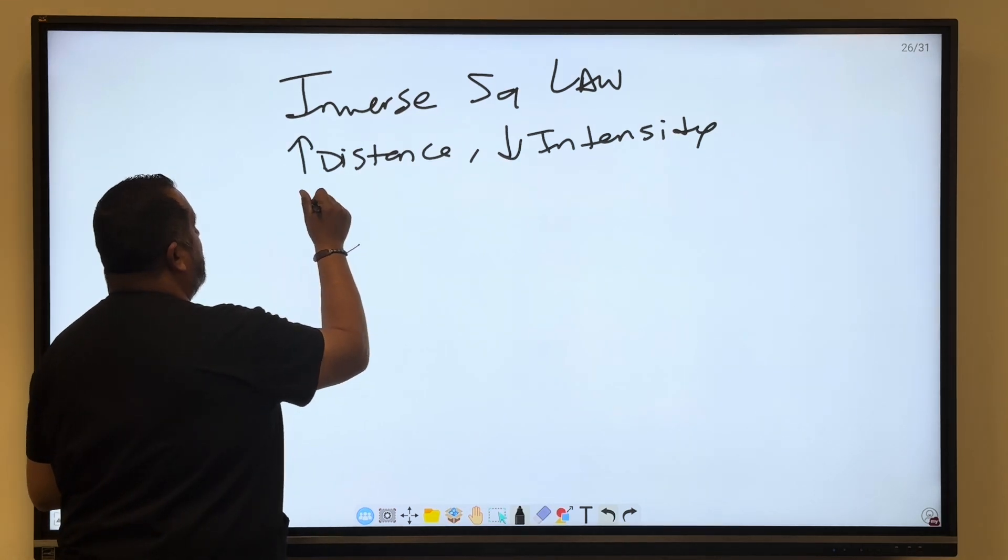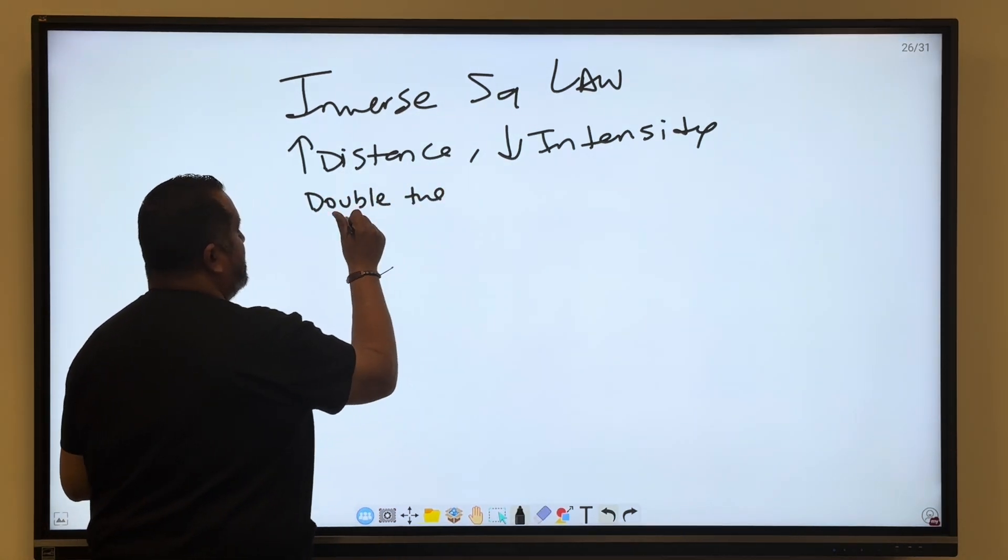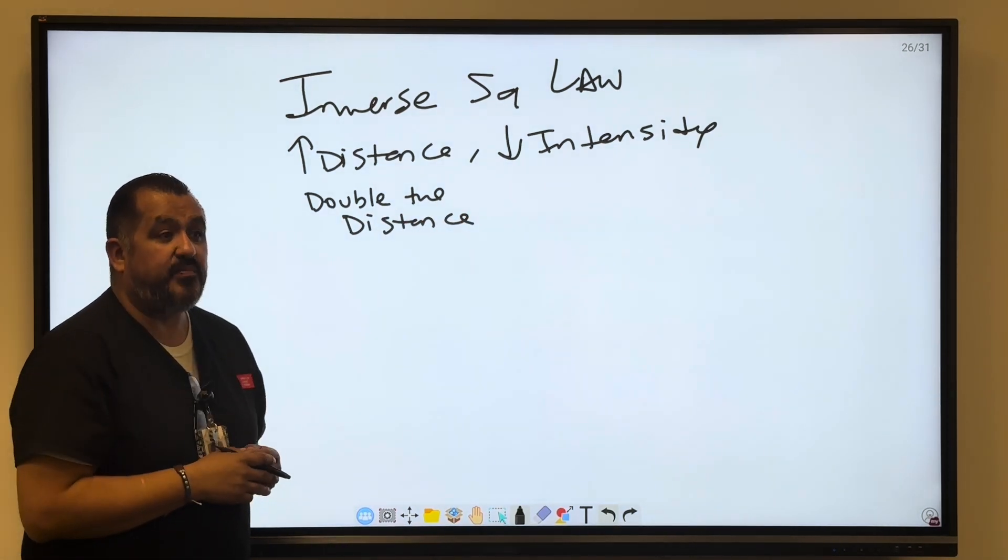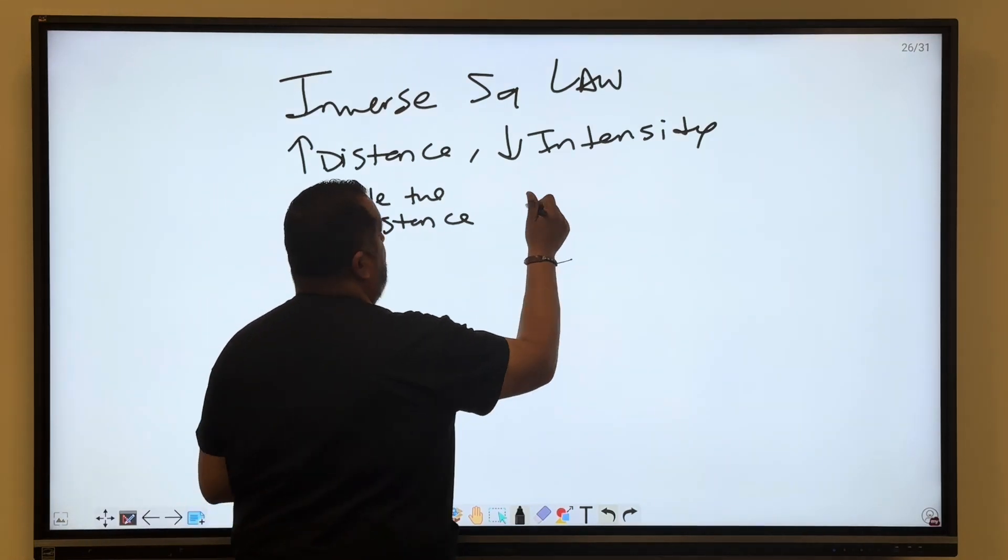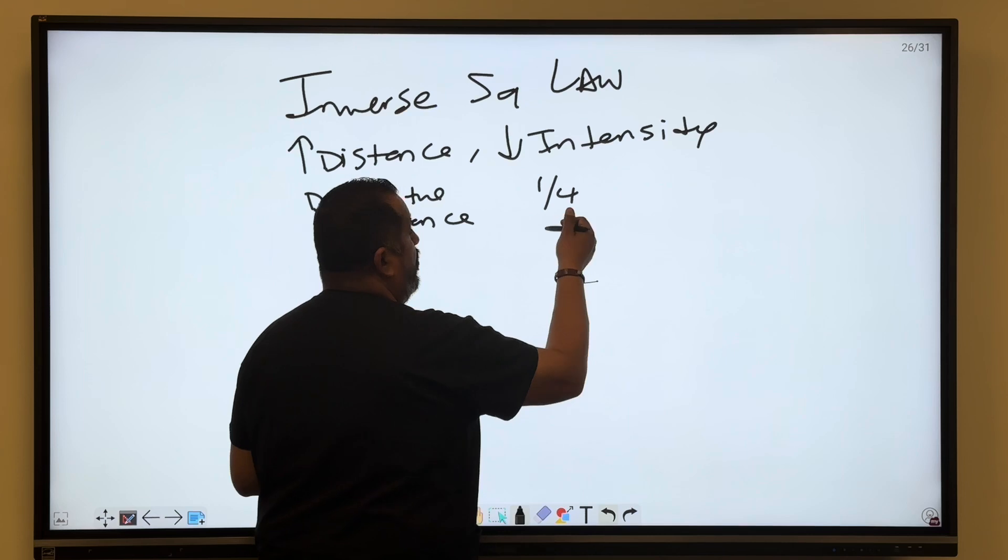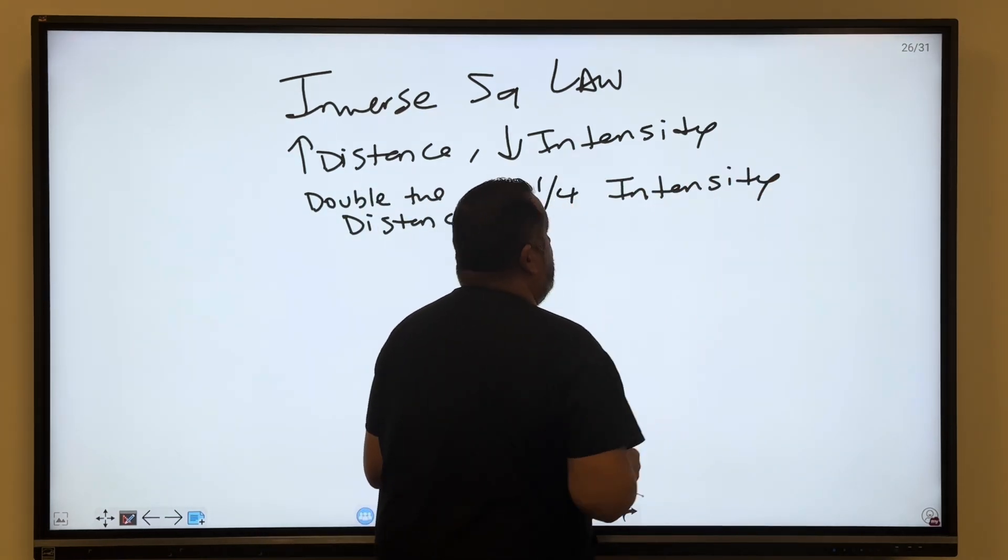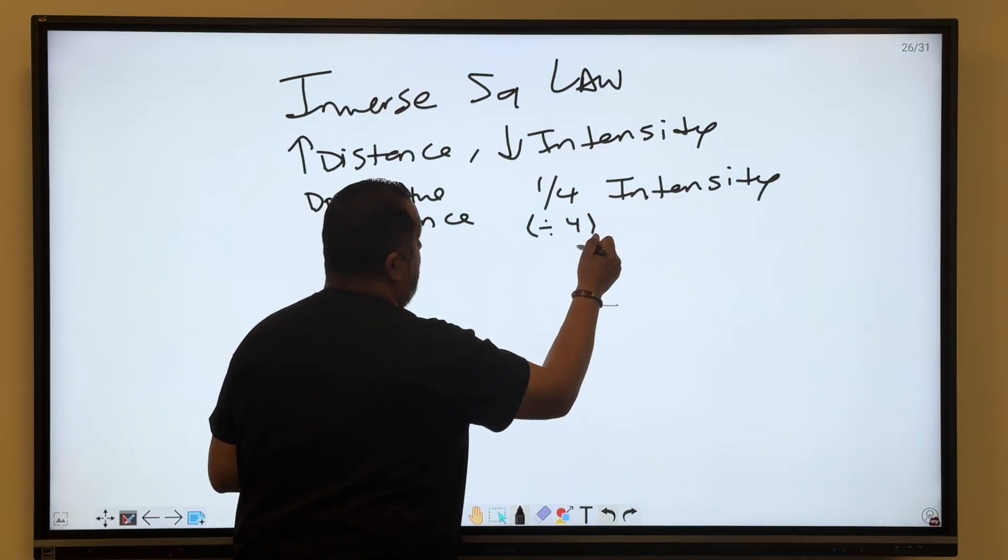Now if you were to go ahead and double your distance, we know the intensity is going to be reduced, but it's going to be reduced by four. So it's going to be one-fourth of the intensity, so you would divide by four.